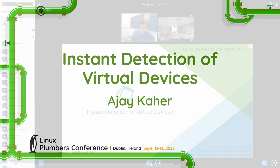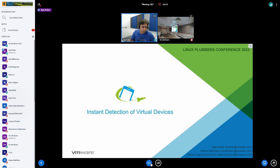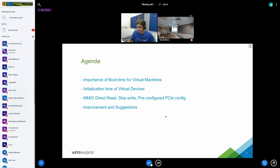Hi all, thanks for joining. I'm Ajay, working for VMware, along with Alexi and Ashwin. Our talk is on instant detection of virtual devices. For the next couple of minutes we'll cover detection and initialization of virtual devices within the VM — starting with kernel boot time importance for VMs and containers, followed by the problem statement around virtual device initialization time, then progressive solutions: MMIO direct read, skip write, and pre-configured PCI config. We'll finish with improvements, benchmarks, and readings.